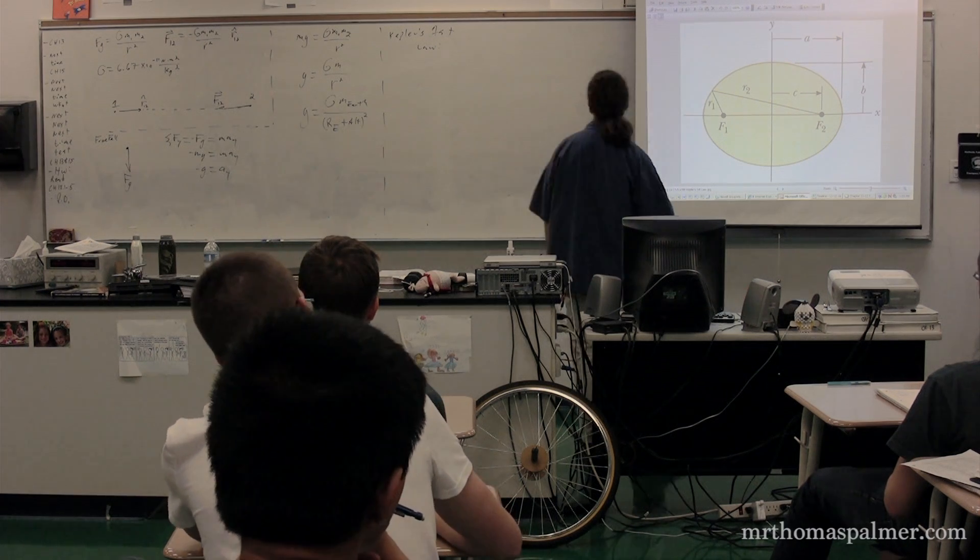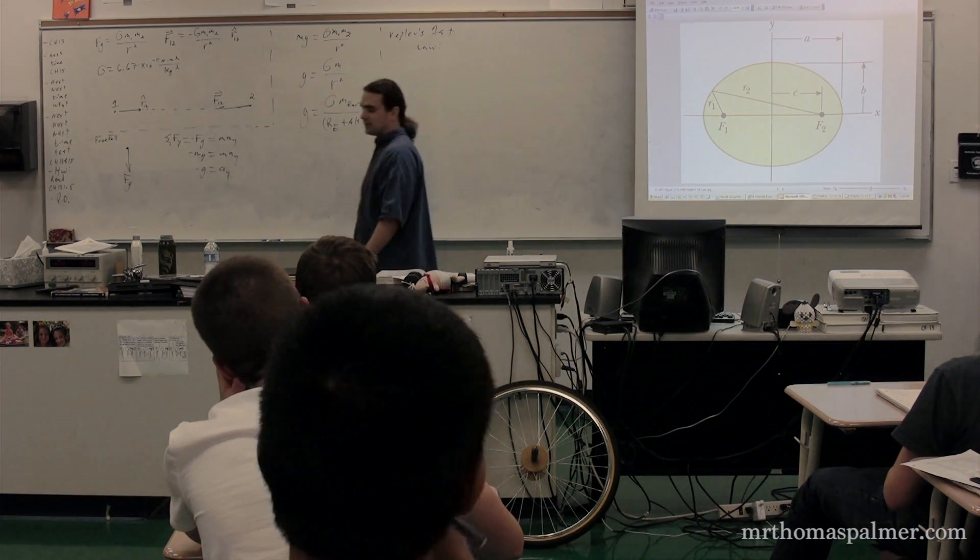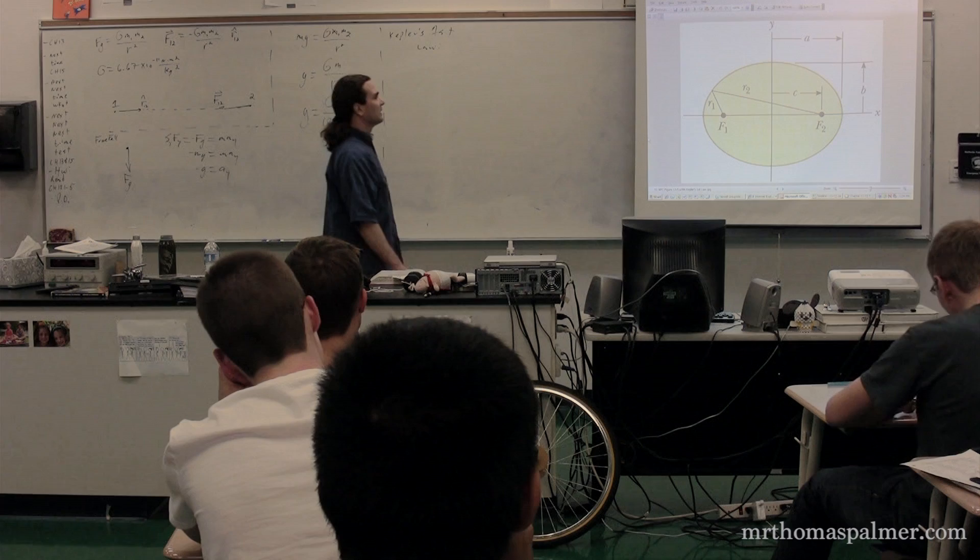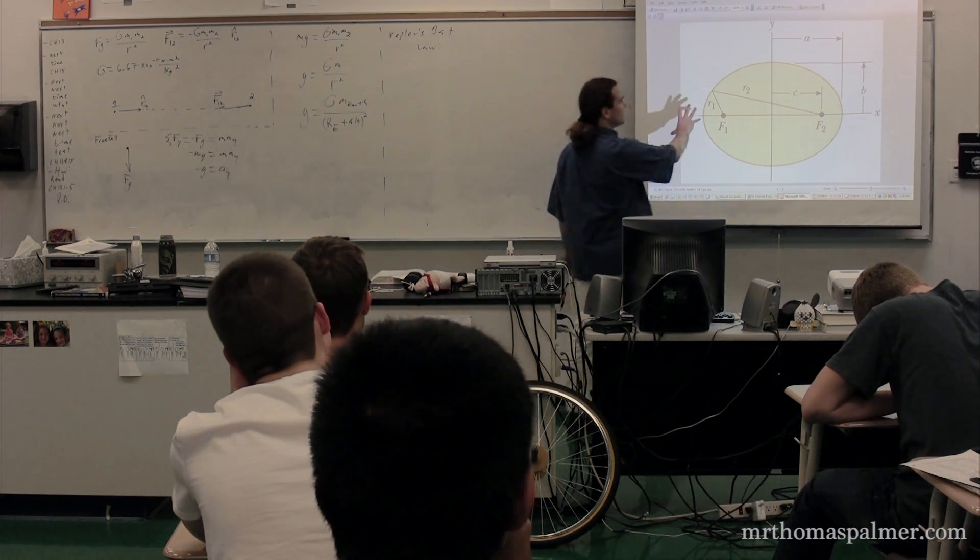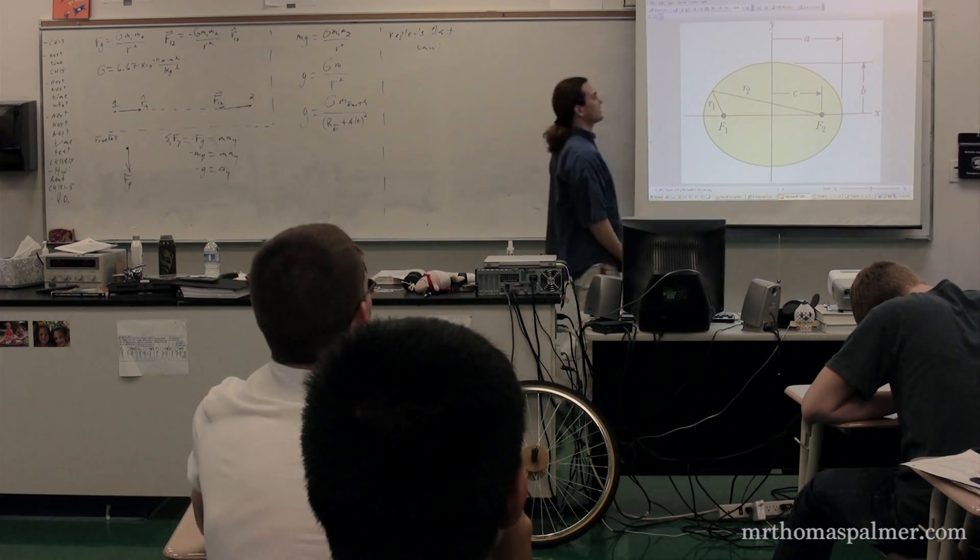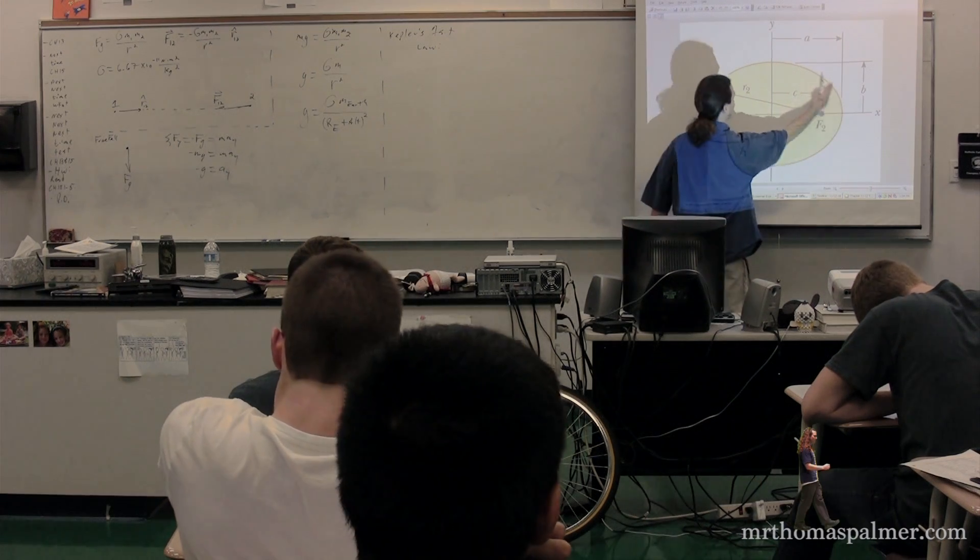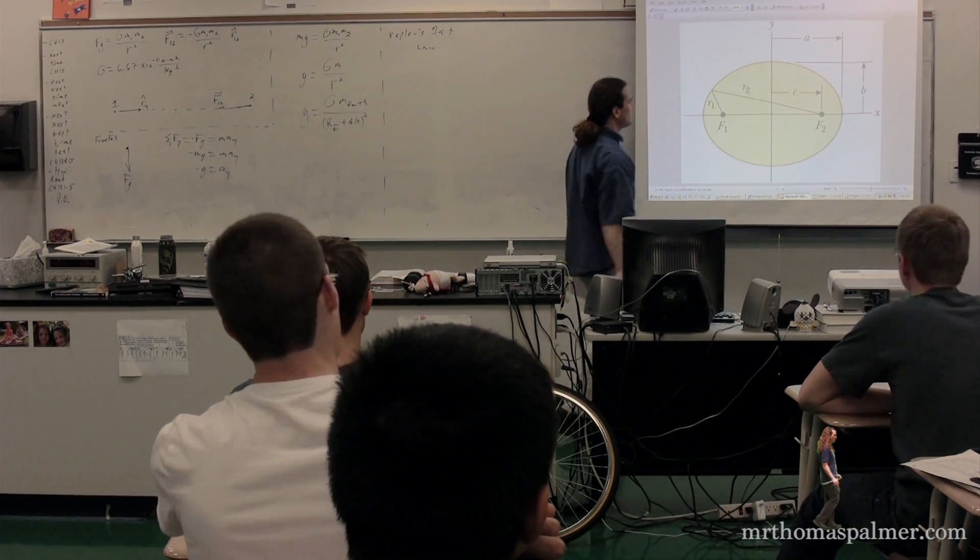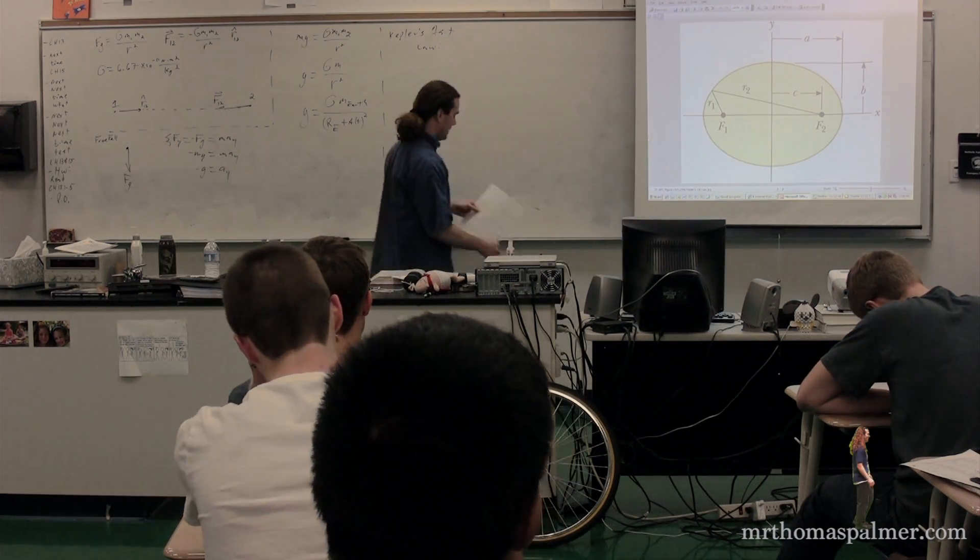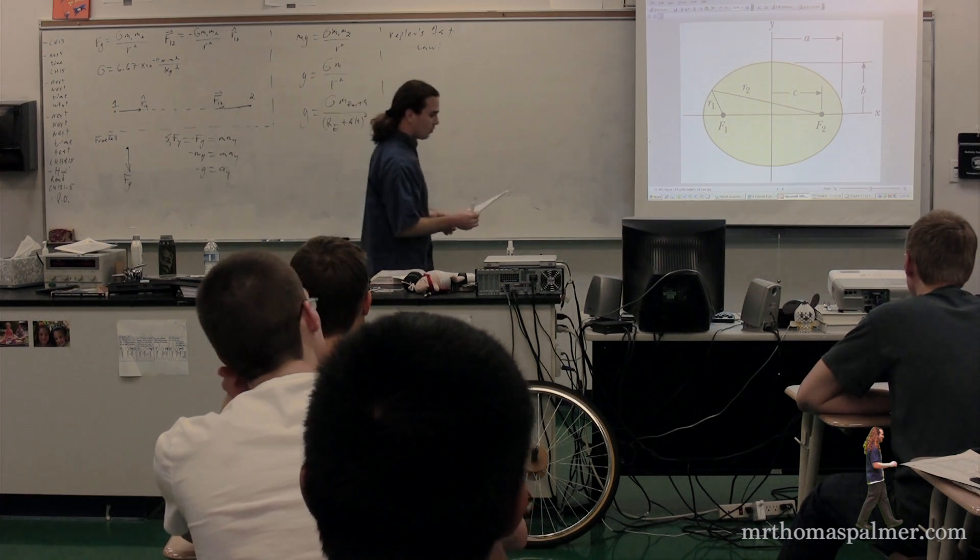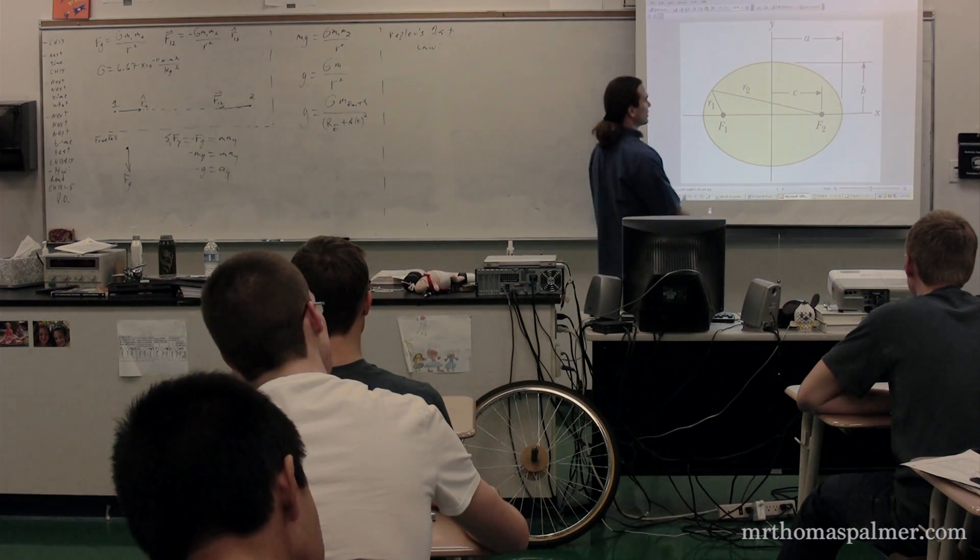Kepler's first law basically just goes through and describes the different pieces of the elliptical orbit of the planet around the Sun. So the Sun is going to be at one of the foci, and you need to know what all of these different things are.